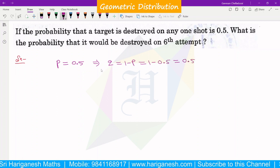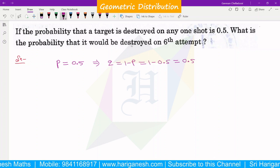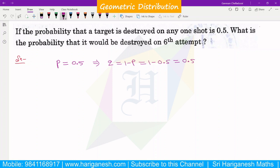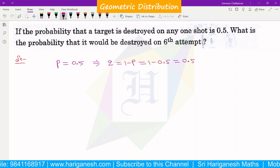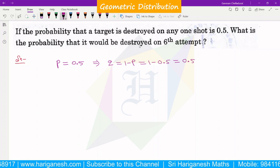In geometric distribution, we have p and q. If in every trial we want success on that trial, that is called geometric distribution. The target destroyed requires one trial.